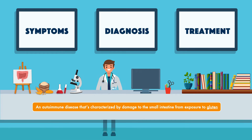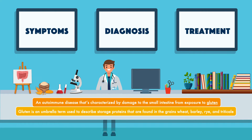Celiac disease is an autoimmune disease that's characterized by damage to the small intestine from exposure to gluten. Gluten is an umbrella term used to describe storage proteins that are found in the grains wheat, barley, rye, and triticale, which is a hybrid of wheat and rye.